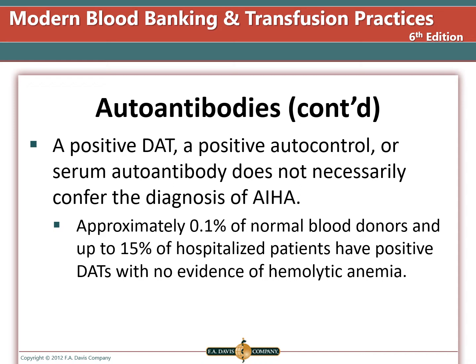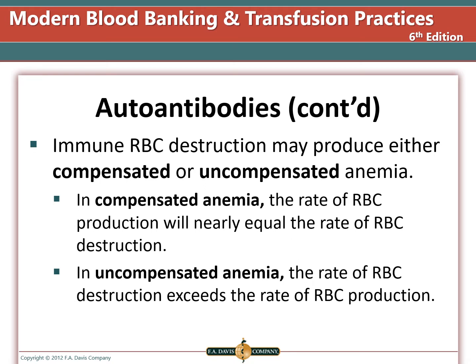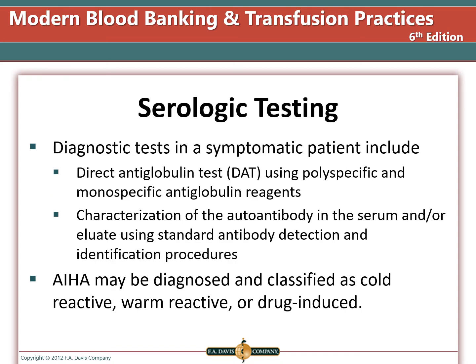The first group — normal blood donors — are well people who are not anemic and have sufficient hemoglobin to donate blood. The other group are unhealthy for some reason and have a higher rate of antibodies reacting to their own cells. Autoantibodies can cause immune red blood cell destruction producing either a compensated or an uncompensated anemia. In a compensated anemia, the rate of red blood cell production nearly equals the rate of destruction, while in uncompensated anemia, the rate of destruction exceeds the rate of production.